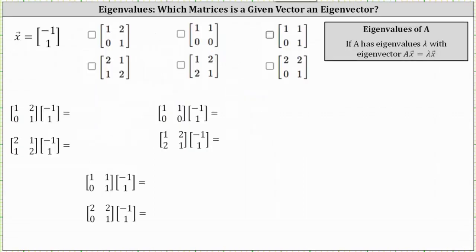I've already set this up below. Let's begin by determining the first product. The first entry is 1 times negative 1 plus 2 times 1, which is 1. And the second entry is 0 times negative 1 plus 1 times 1, which is 1. The vector (1, 1) is not a scalar multiple of the vector (-1, 1), which indicates the vector (-1, 1) is not an eigenvector for the given matrix.